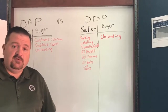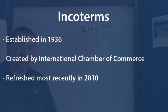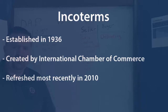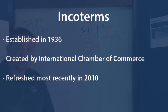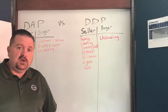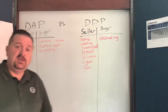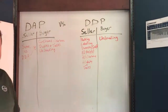To give you a refresher on Incoterms, they have been around since 1936 and were created by the International Chamber of Commerce. They've been refreshed several times over the years, most recently in 2010. So to get right to it, what are the differences between DDP and DAP?